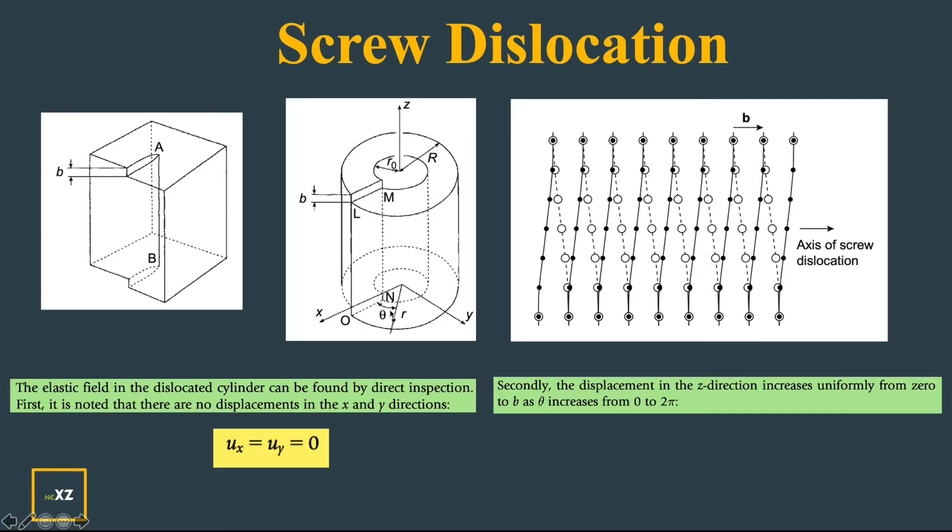But in the z direction you can see displacement. As you go from theta equals 0 to 360 degrees or 0 to 2π, you can see that the displacement increases from 0 to burgers vector b. So this is the formula that has been used - this varies from 0 to b.